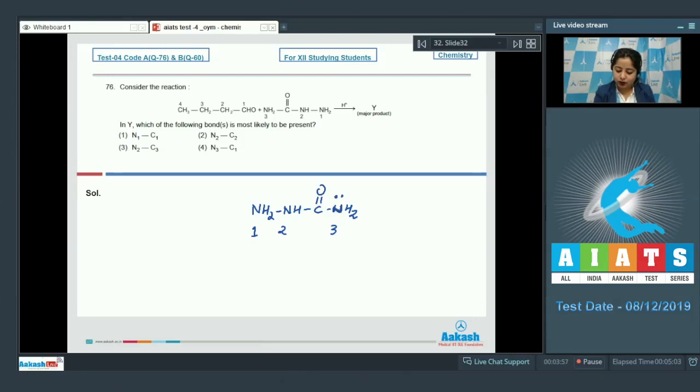All the three nitrogen atoms have lone pair. But the lone pair of nitrogen which is marked as 2 and which is marked as 3 is delocalized because of resonance with the carbonyl group. The lone pair of nitrogen which is marked as 1 is free for donation. As a result, this nitrogen will participate in the nucleophilic addition reaction with the carbonyl group.